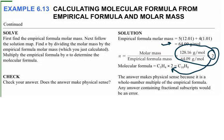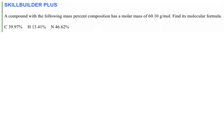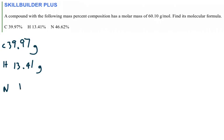This time we don't have the empirical formula, but we have the data to find it. This one is in percentages. One of the things to do is get rid of the percent sign and assume the sample is based on 100 grams, because percentages add up to 100%. So 39.97% becomes 39.97 grams of carbon, 13.41 grams of hydrogen, and 46.62 grams of nitrogen.